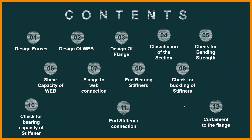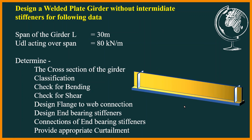Lastly we'll go for the end stiffener connection and, if required, curtailment of the flange. Before going to the actual design process, here is the problem statement: we are going to design a welded plate girder without intermediate stiffeners. The span of the girder is 30 meters and the UDL acting on the span is 80 kN/m. We'll also calculate the self-weight of the plate girder.